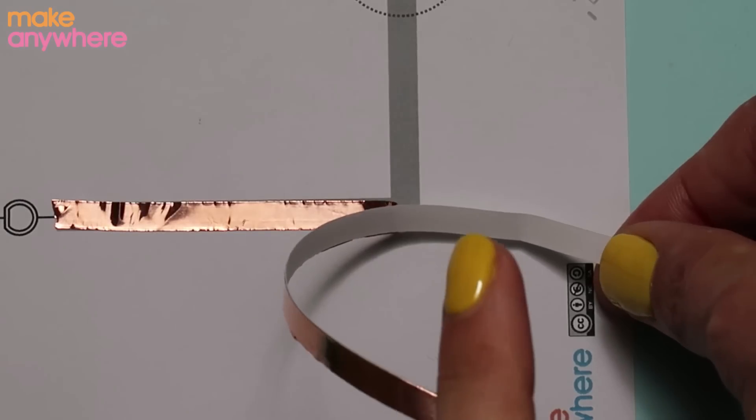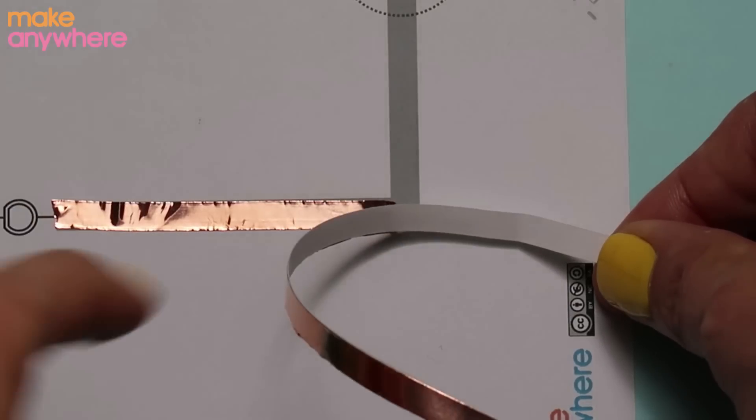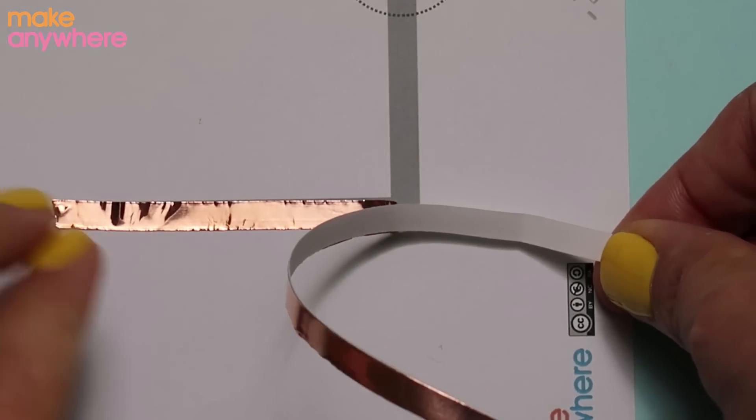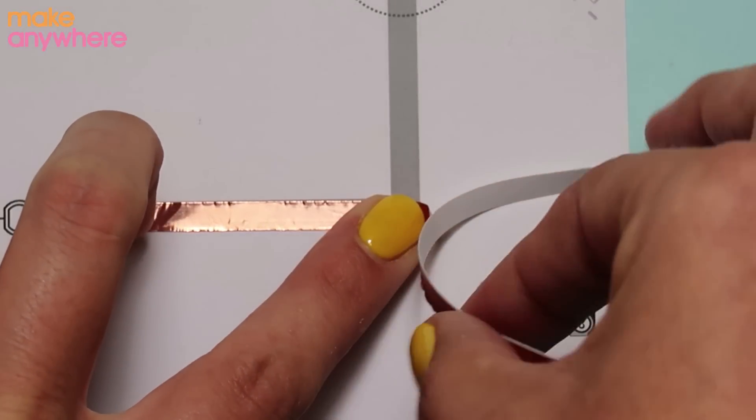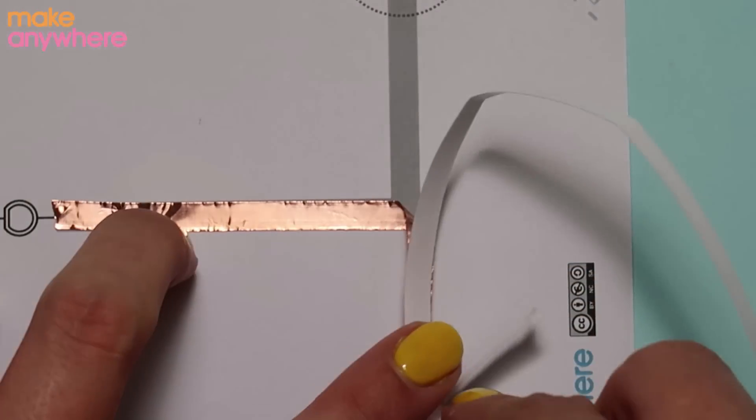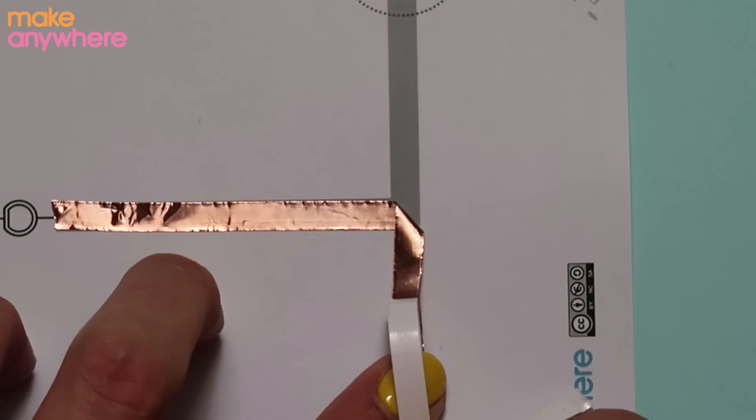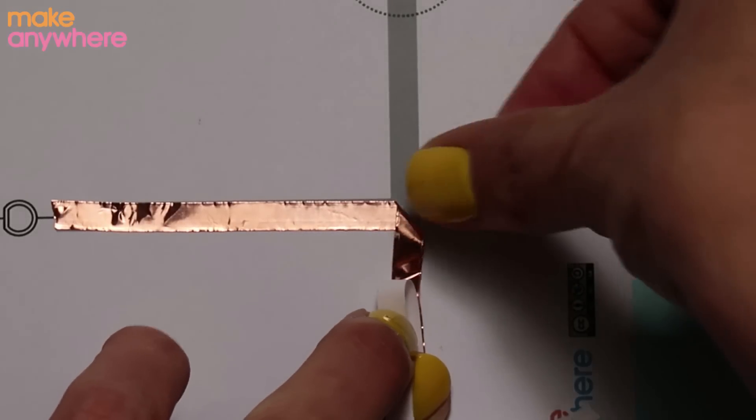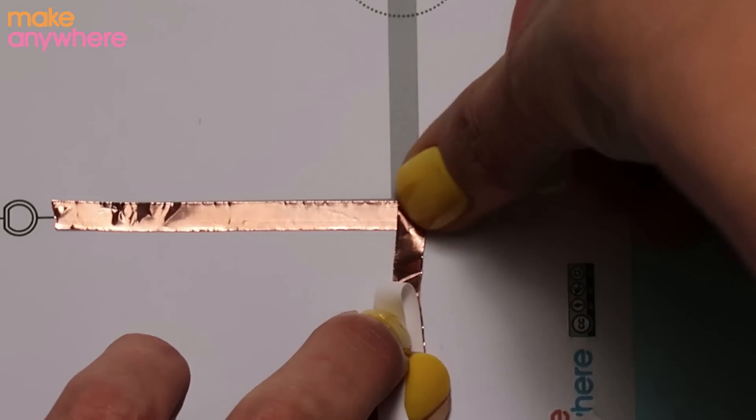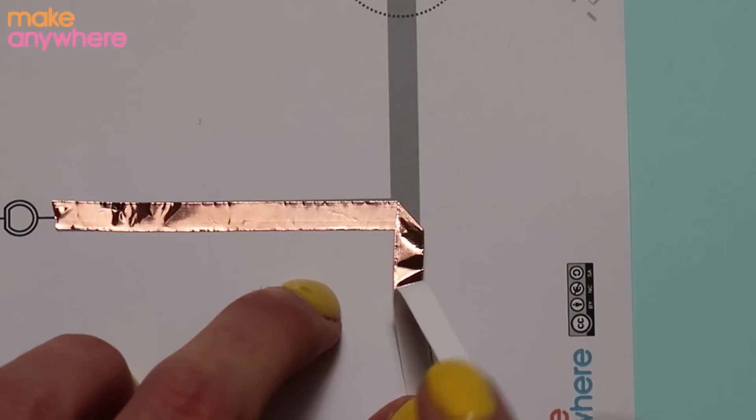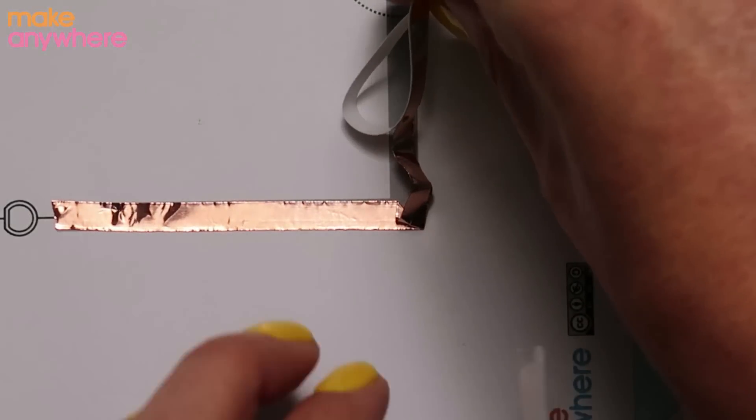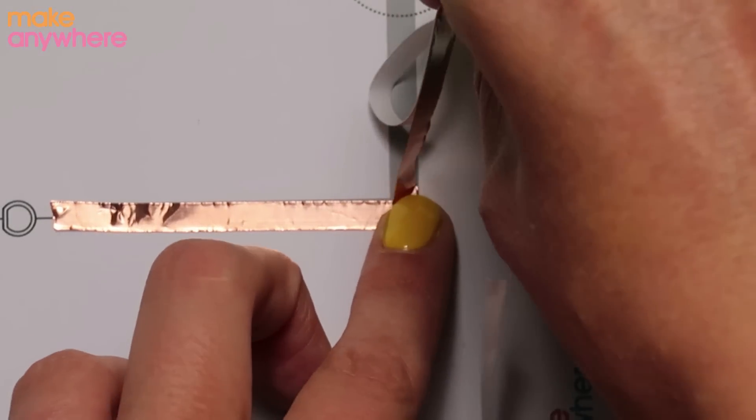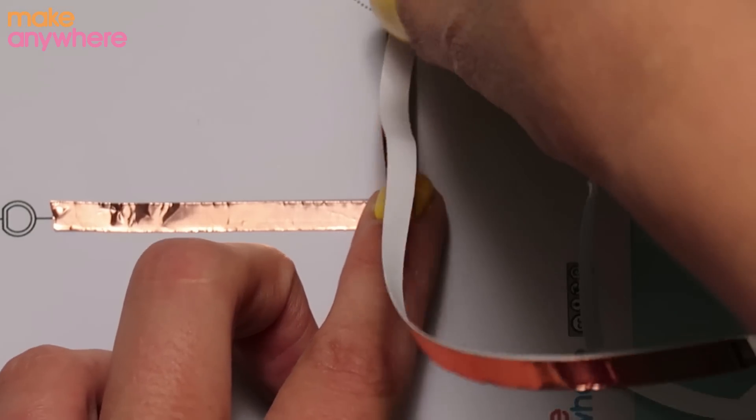Now, we want the copper tape to end up going that way. First, we need to bend it the opposite direction. So go to the end, fold your copper tape in the opposite direction and then using your finger push down. Now we're going to fold it so it goes back in the right direction. Push your finger down in the corner and then we want to end in the middle of the circle.